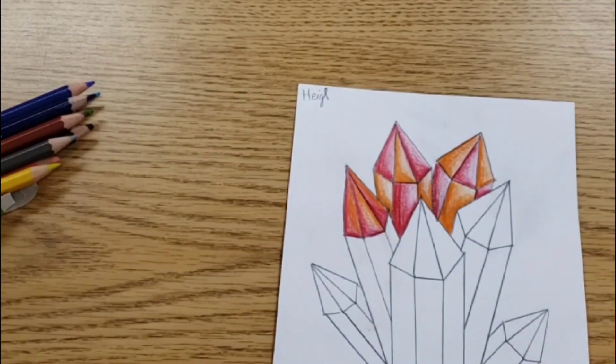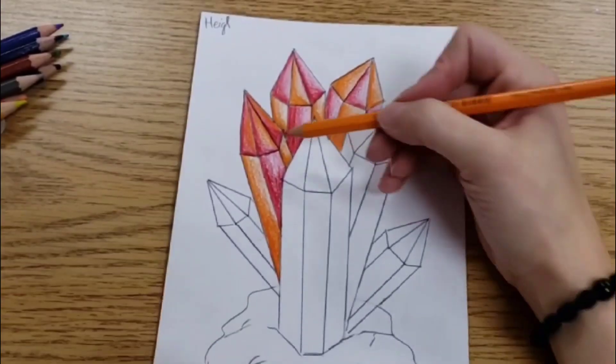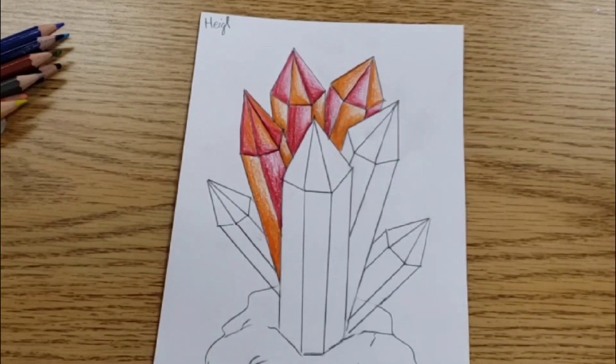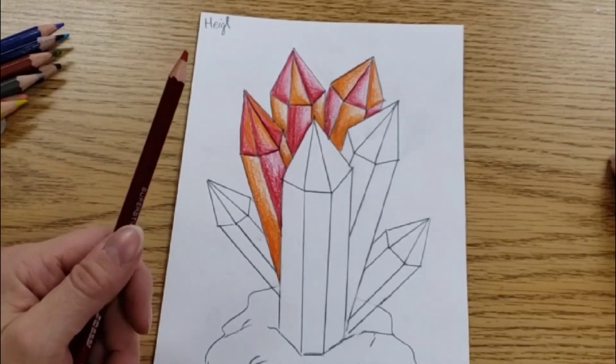And repeat for all of your crystals. In areas like this where you see there's both colors touching this crystal, just pick one. Pick whichever one you want to start with and that's what we're going to roll with.